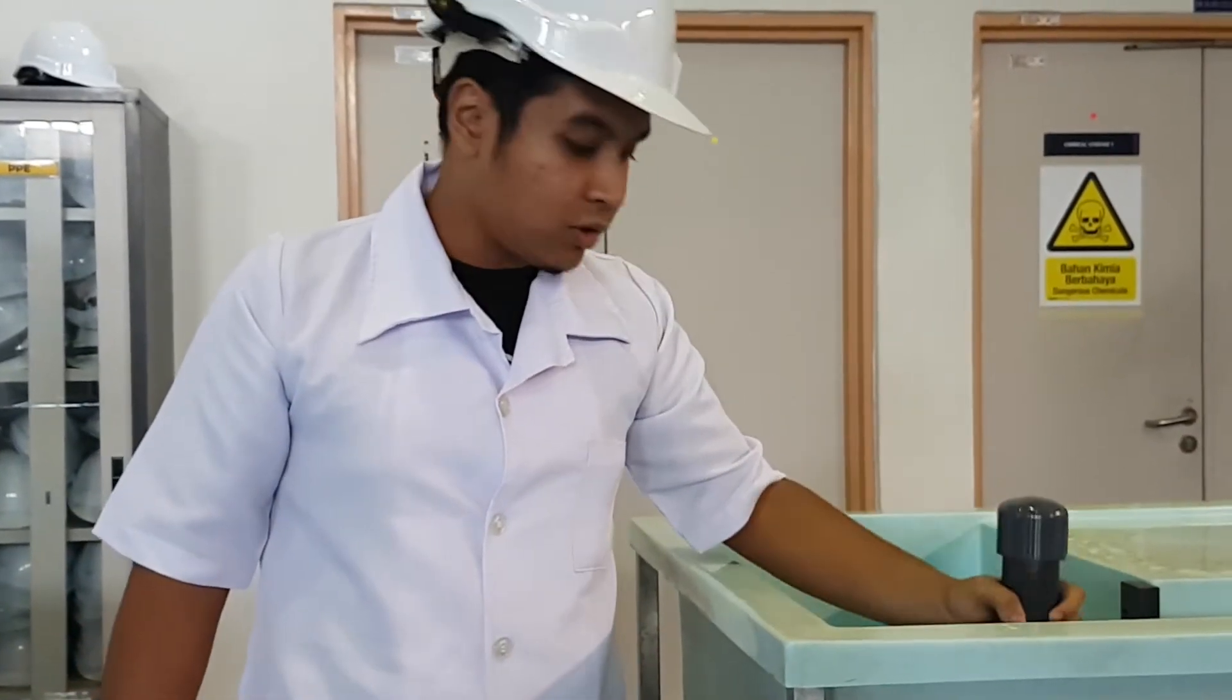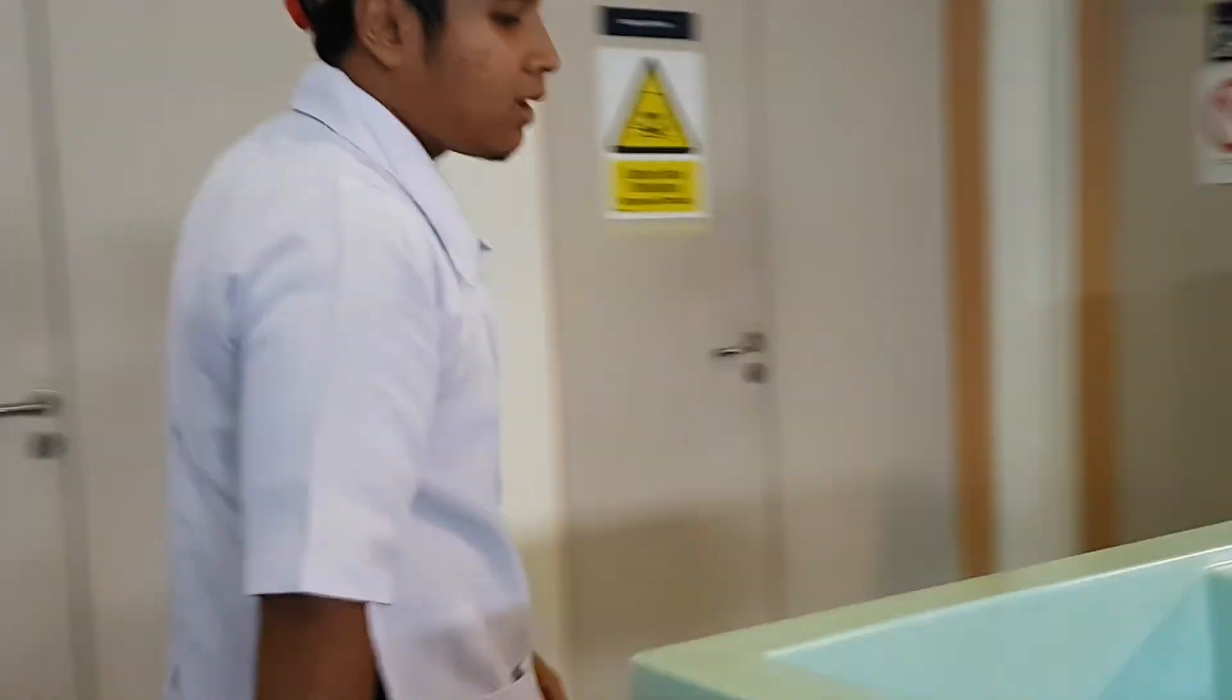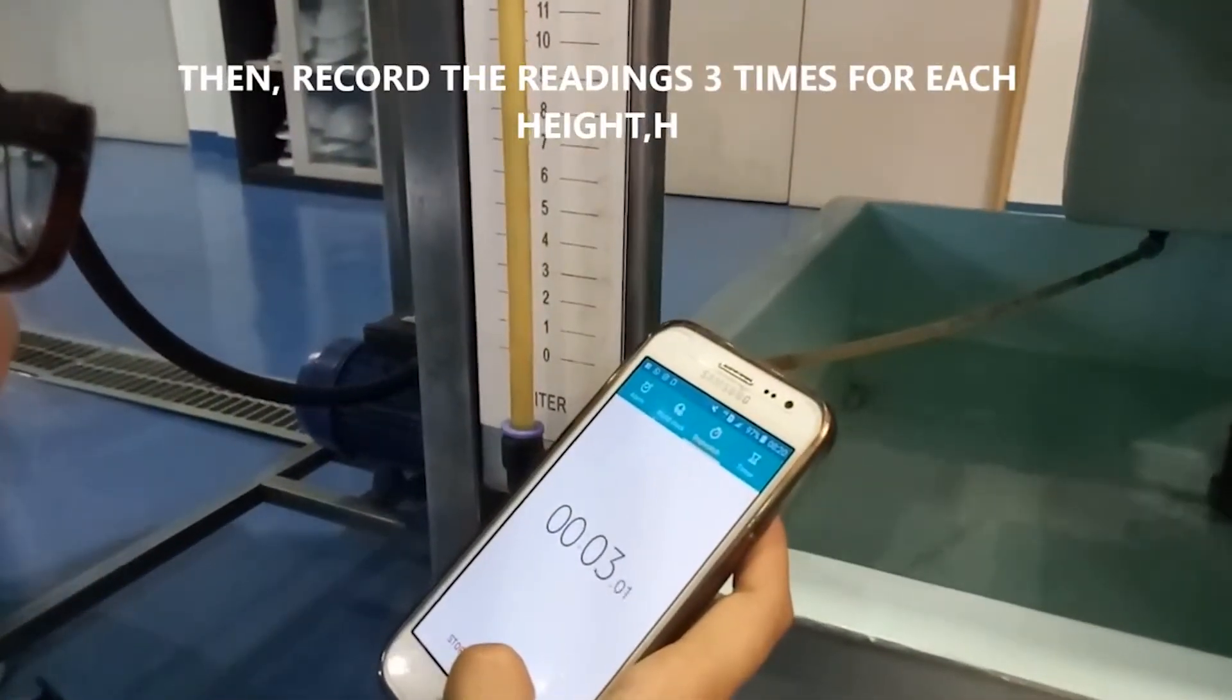Then we need to block the water flow here so that we can take the flow rate of the water right here. Okay, once the water starts to be at zero, then we need to set the timer.